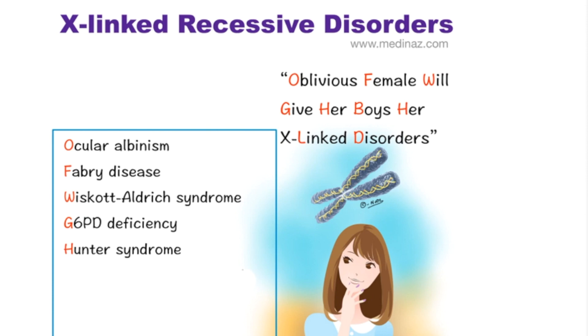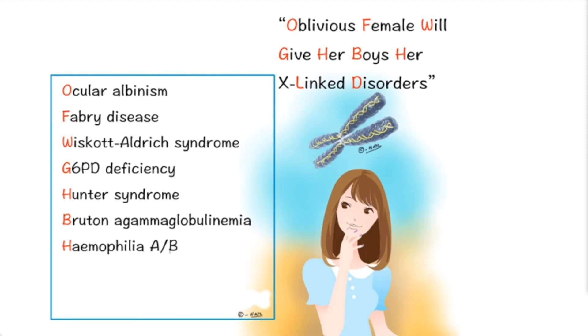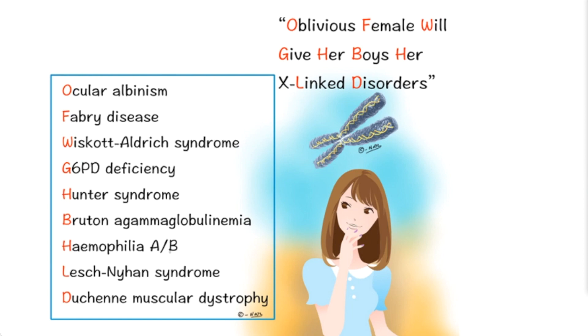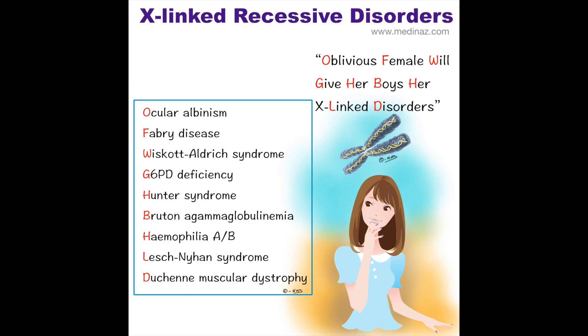B for Bruton's agammaglobulinemia, H for Haemophilia A and Haemophilia B, L for Lesch-Nyhan syndrome, and D for Duchenne muscular dystrophy.